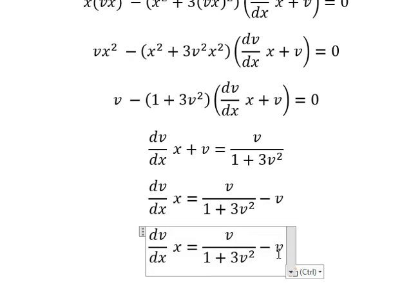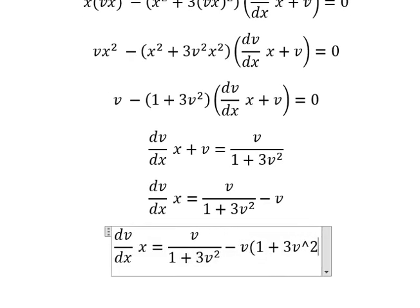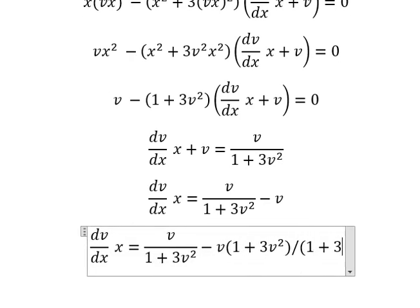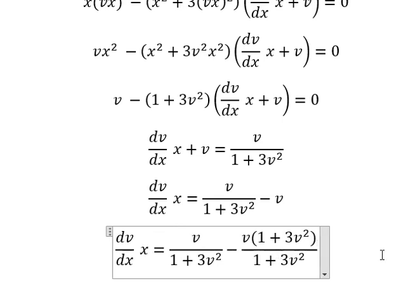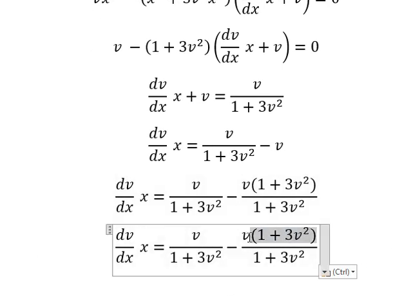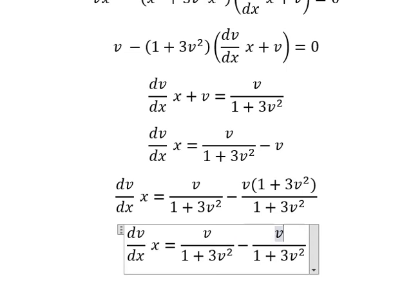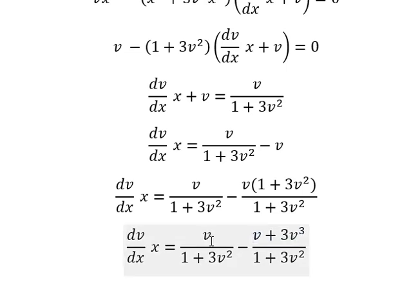So we need to do common denominator. This one, we have v plus 3v to the power of 3. So v minus v, we cancel. So we just have only negative 3v to the power of 3.